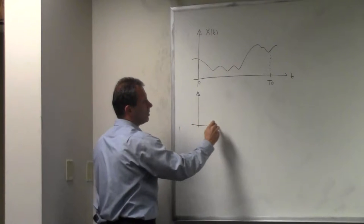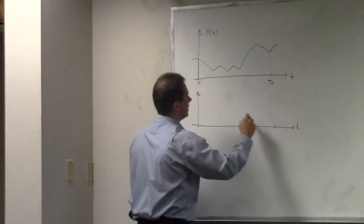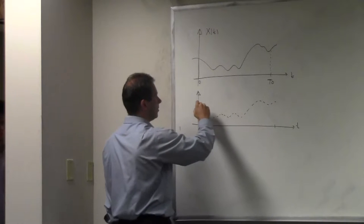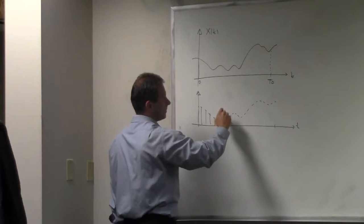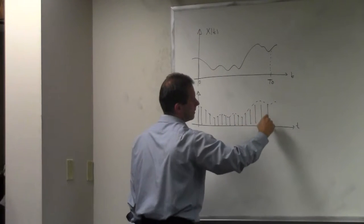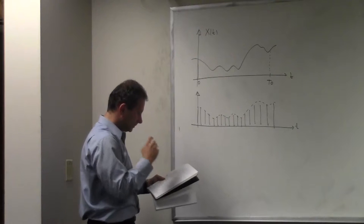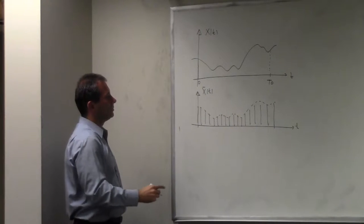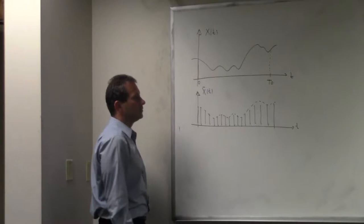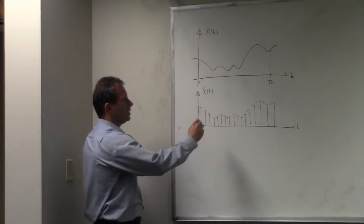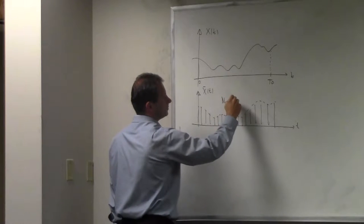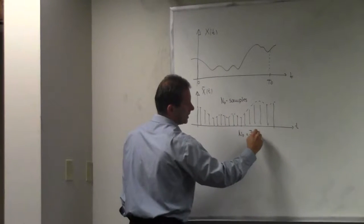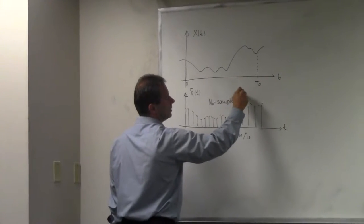The second element is that we cannot operate on a continuous signal, so we sample it. You get a whole bunch of samples of this signal — a sampled signal X. Then we apply the Fourier transform on this set of samples. In this case there are N0 samples, where N0 equals T0 over Ts, and Ts is the period between two adjacent samples.